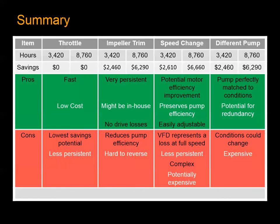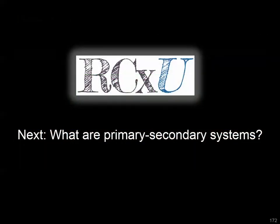There are a lot of dynamics that determine what the best opportunity would be for your system. It's going to depend on your pump size, how often you run it, and your local costs for something like a machine shop impeller trim or new VFD installation. Replacing the pump may be contingent on not being able to pursue one of these changes or having a pump at the end of its life. There are different pros and cons associated with each option, so you really need to consider the particular dynamics and economics of your system. Looking at pump optimization opportunities is something we want to consider in a retro-commissioning assessment. With that, we'll take a brief look at primary-secondary systems before we start investigating the features of our airside systems. Thank you.